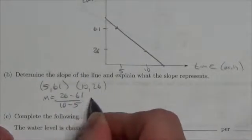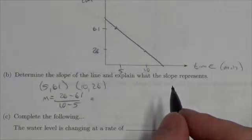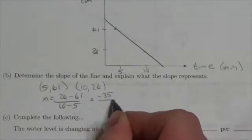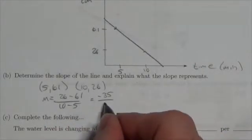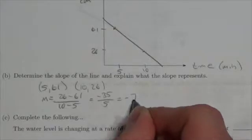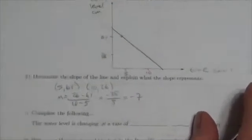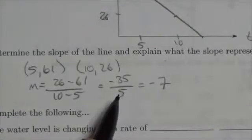So our slope is going to be 26 minus 61 over 10 minus 5. So 26 minus 61, I'm just going to do this on my calculator real quick, minus 35, and then 10 minus 5 is going to be 5, so that simplifies down really nicely to negative 7.